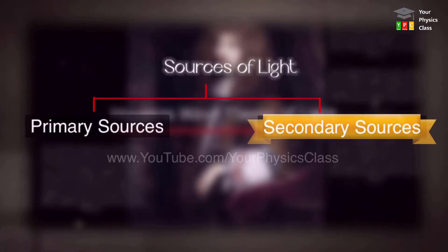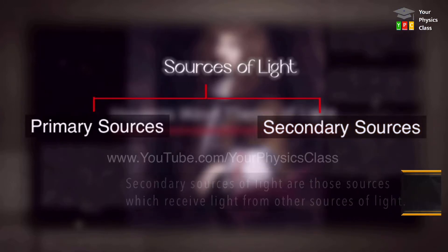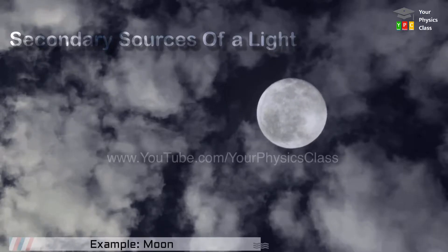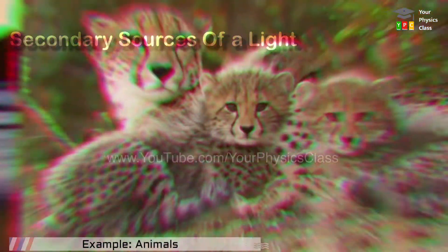The secondary source of light are those sources which do not produce light of their own but receive light from some other sources and either reflect or scatter it around. For example, moon, the planets, all human beings, animals, plants, etc.